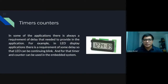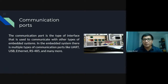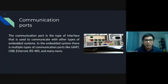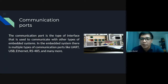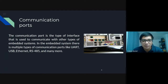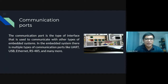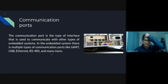Now we go to communication ports. A communication port is the type of interface used to communicate with other types of embedded systems. In the embedded system, there are multiple types of communication ports, like UART, USB, Ethernet, RS485, and many more. UART stands for Universal Asynchronous Receiver and Transmitter. We know what USB is. Ethernet is the port where you plug your UTP cable.